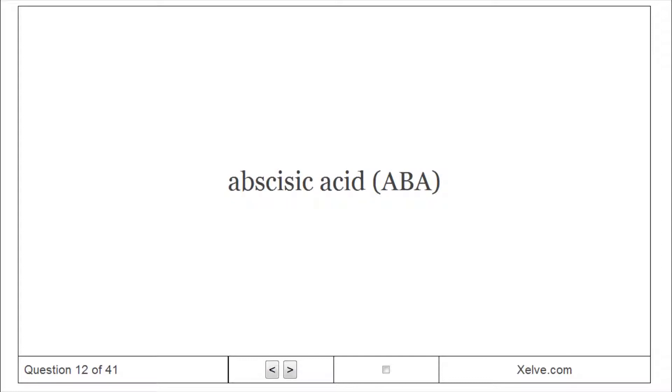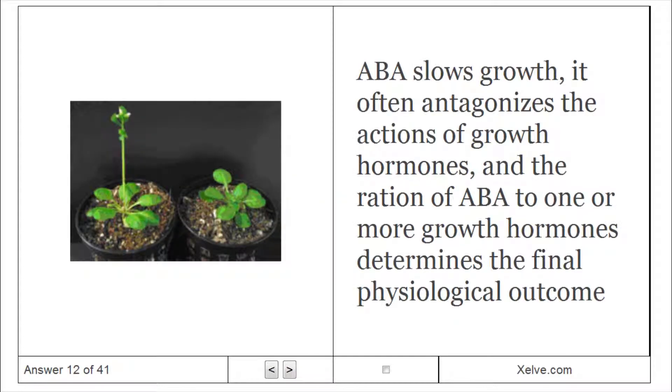Abscisic acid: slows growth and often antagonizes the actions of growth hormones. The ratio of ABA to growth hormones determines the final physiological outcome.